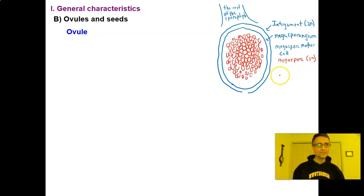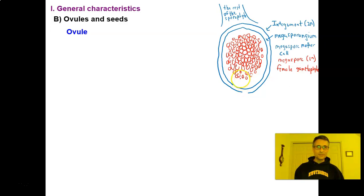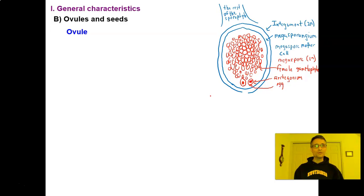The surviving 1N megaspore divides by mitosis until the entire megasporangium is filled by those cells — producing a female gametophyte, also 1N. The female gametophyte produces gametes in chambers called archegonia, each containing an egg cell. At this point, we have an ovule that is ready to be fertilized.